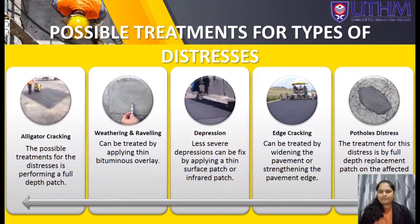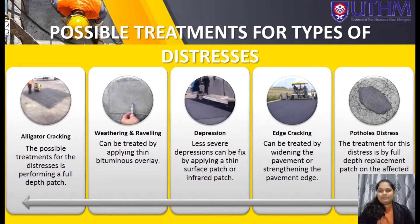Raveling is the progressive disintegration of the pavement surface by loss of binder, aggregates, or both. Fine aggregates wear away first, leaving small pock marks on the surface. The common cause is placing asphalt too late during paving, which can be treated by applying a thin bituminous overlay. Depressions are localized pavement surface areas with slightly lower elevations than surrounding pavement and can be seen after rain when they fill with water. Treatment depends on severity — less severe depressions can be fixed by applying a thin surface patch or infrared patch. Edge cracking occurs in unconfined asphalt pavement and can be treated by widening or strengthening the pavement edge.